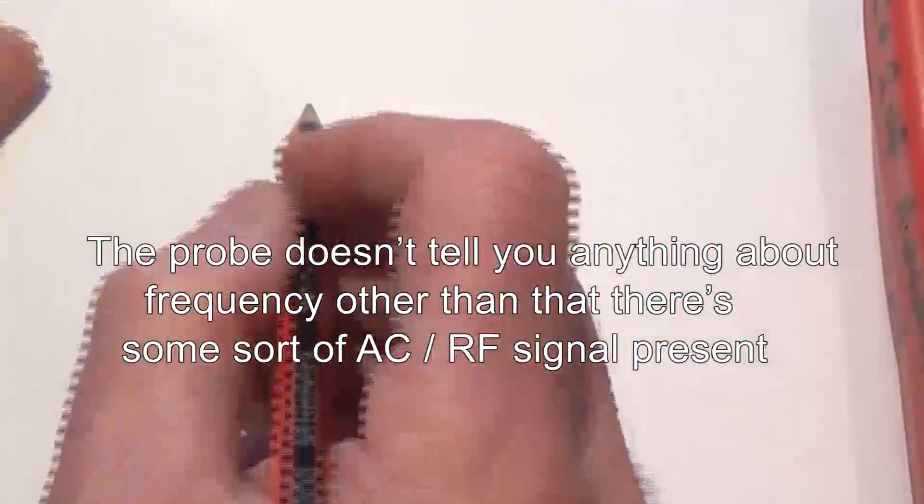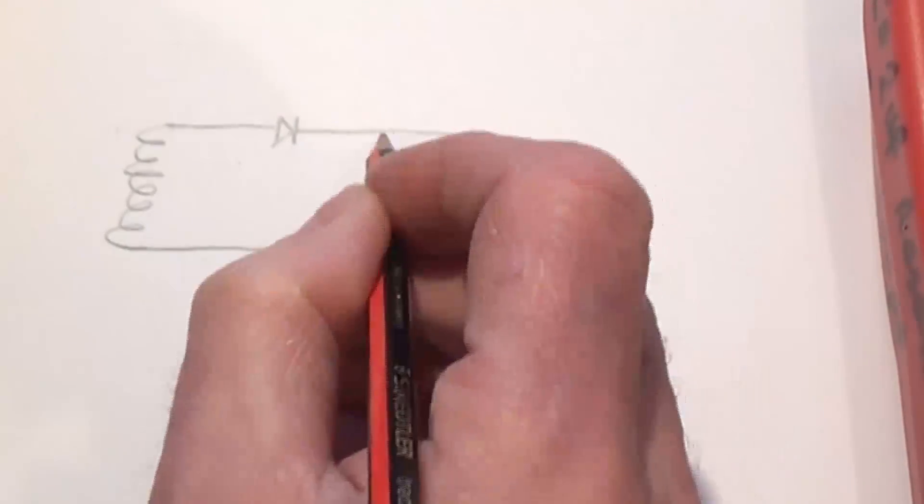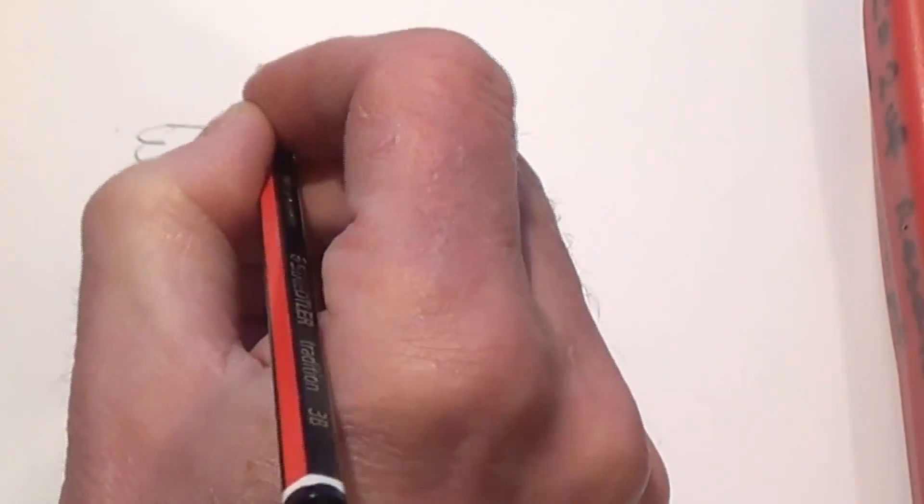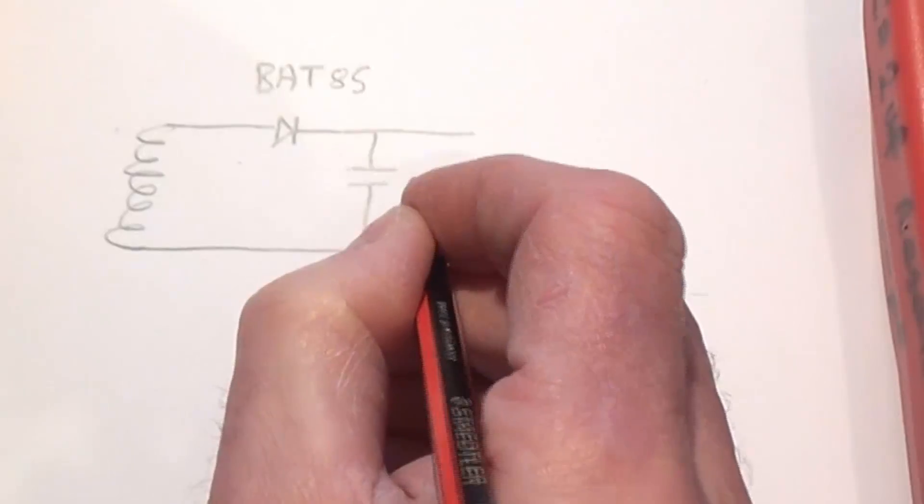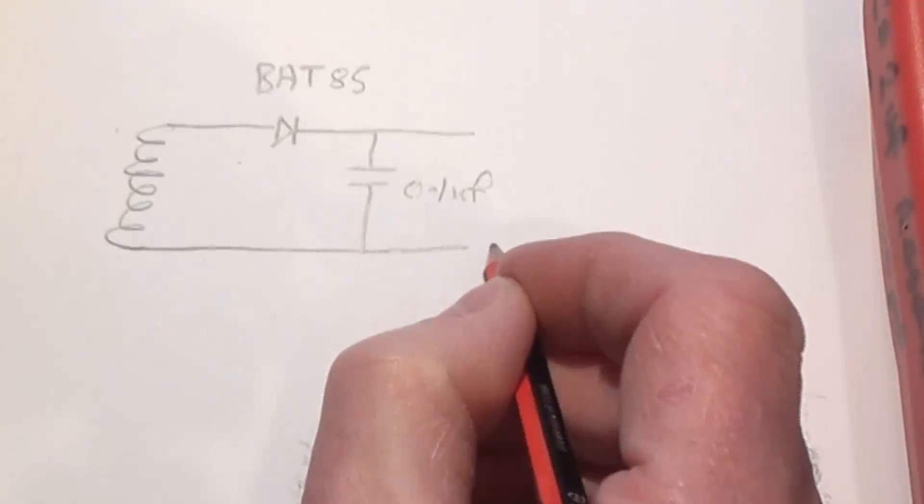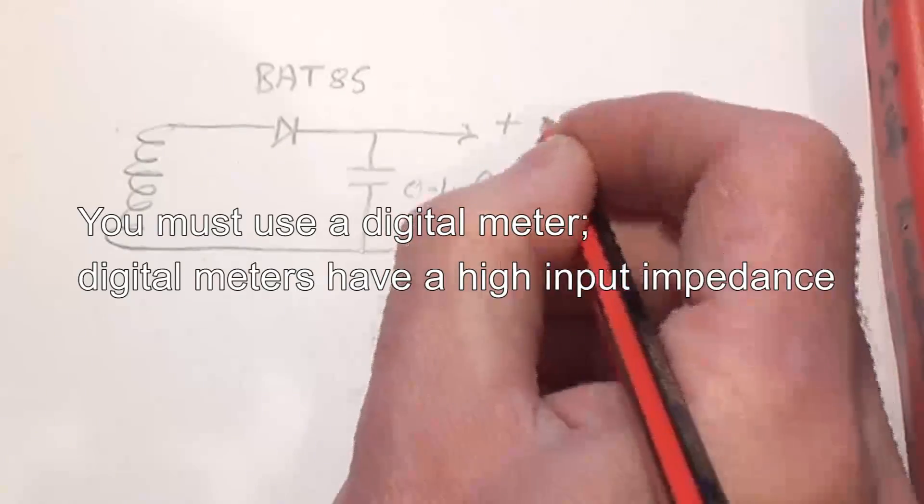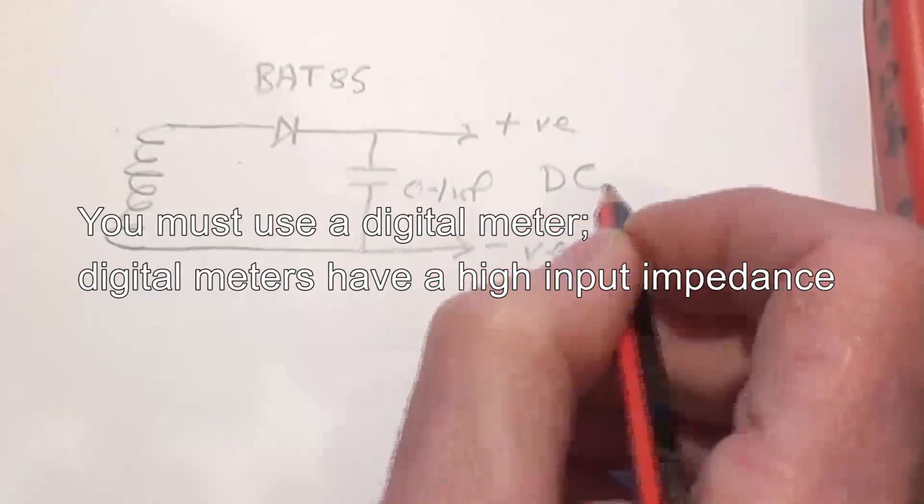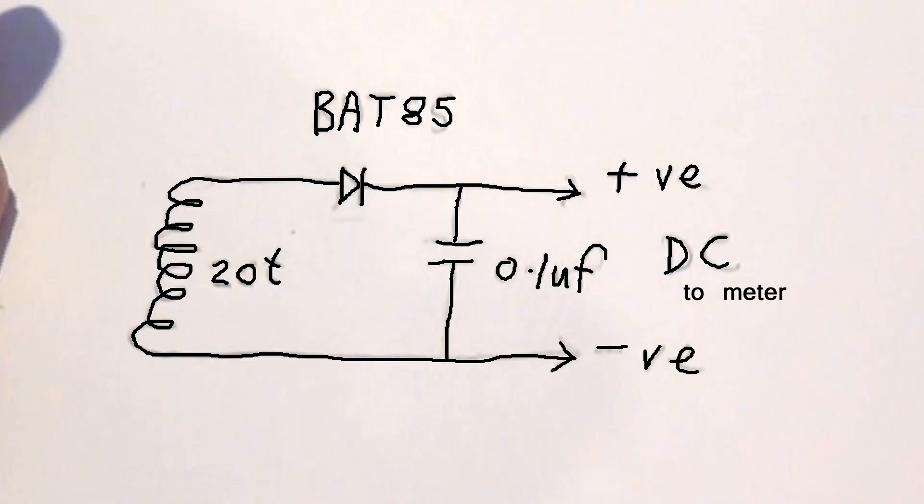The circuit for it is very simple - there's the detector coil, and then there's a little diode in there and a capacitor. I'm using a BAT 85, and the capacitor is a 0.1 microfarad. That's the negative voltage out to the meter and that's the positive volts out to the meter. Of course that is DC because of this diode. I've probably got about 20 or so turns on there, and you can experiment and see what suits you best for the frequency that you're working at.